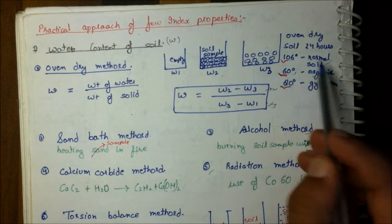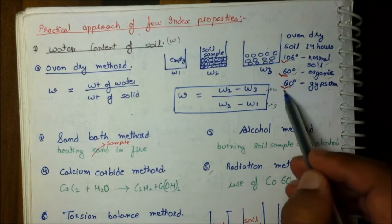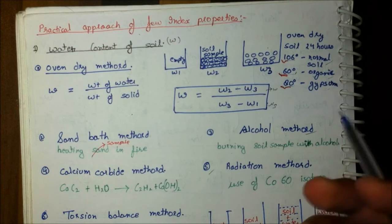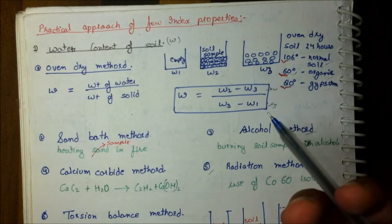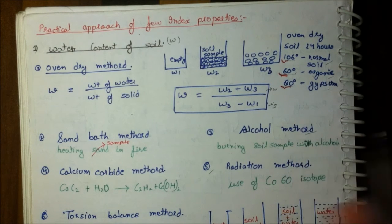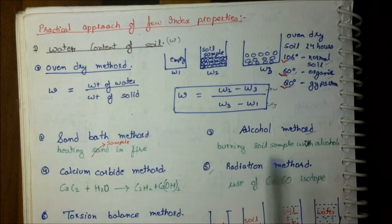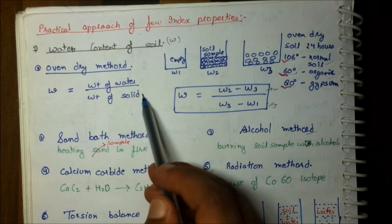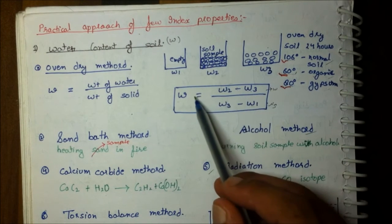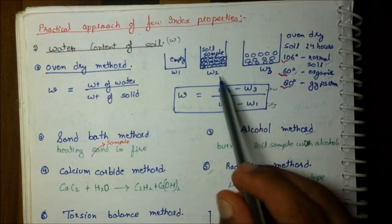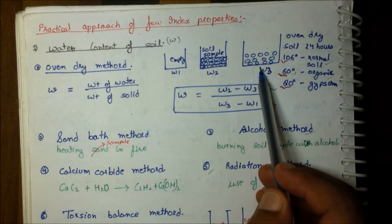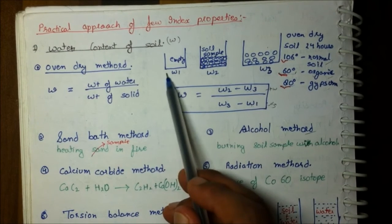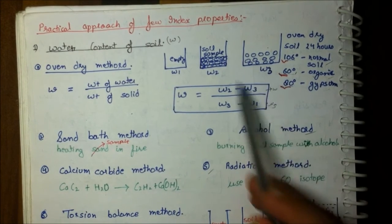The drying temperature is 106°C for normal soil, 60°C for organic soil, and 80°C for gypsum soil. For organic soil, burning above 60°C will destroy organic matter; for gypsum, above 80°C structural water will dissipate. Water content is calculated as (W2 minus W3) — the weight of water — divided by (W3 minus W1), which is the dry weight of soil, expressed as a percentage.